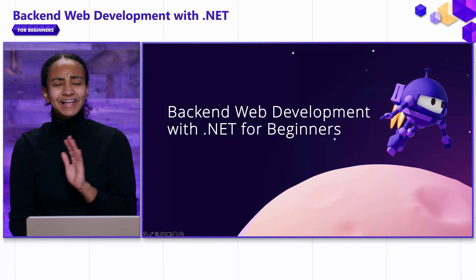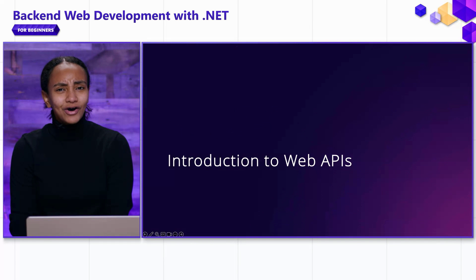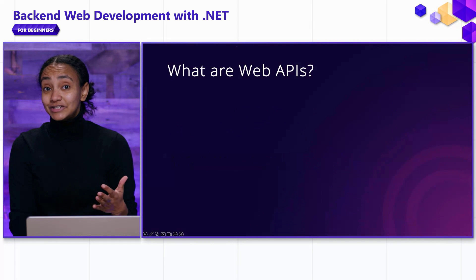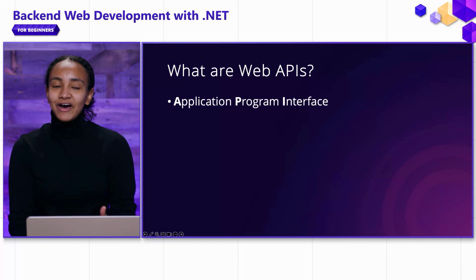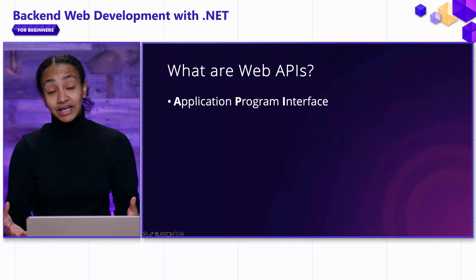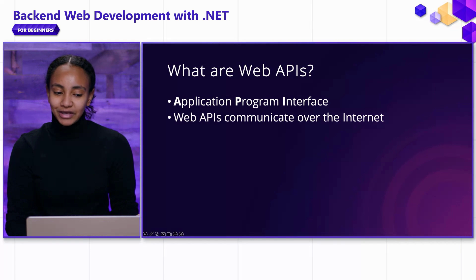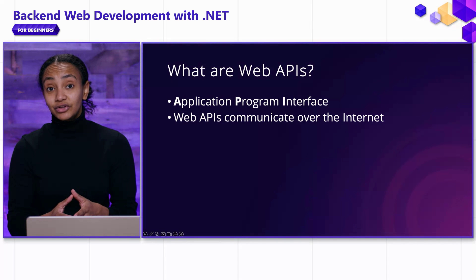Before we get started, let's define a few terms. First, what are web APIs? Before we can talk about web APIs, we have to talk about APIs. APIs are application program interfaces, and it's a way for applications to communicate with each other. Web APIs are simply APIs that communicate with each other over the Internet.